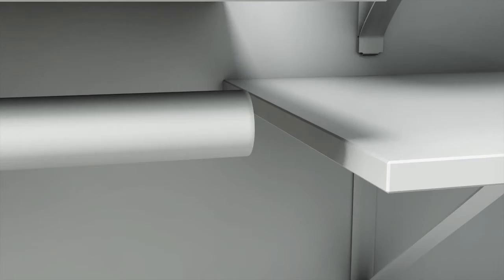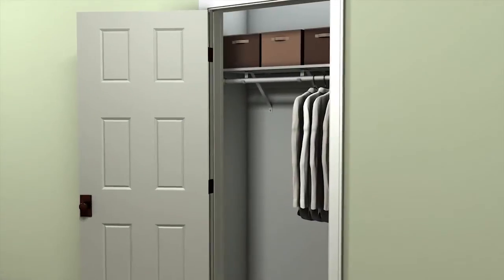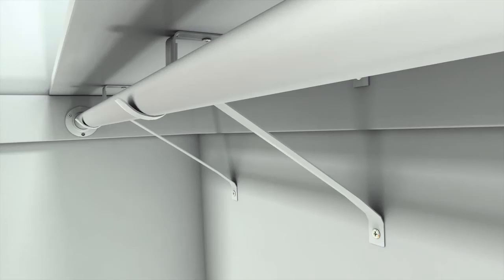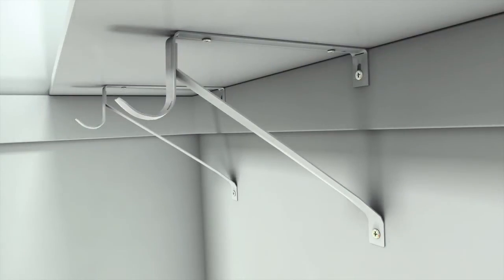Pole end caps provide safety and create a finished look to your closet. Hall closets are often built with a cleat board at the 68 inch height. A closet with cleat boards requires a specialized bracket. Otherwise, the assembly process is the same as a closet without cleat boards.